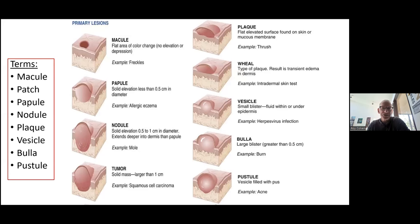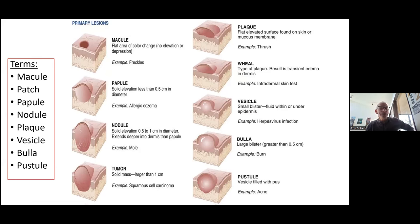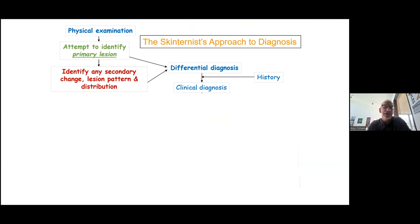Primary lesions come in a number of different types: macule, papule, nodule, tumor. These terms are not difficult to use, and using them accurately in a note almost makes taking a photo unnecessary — though pictures are nice to have too, because some subtle findings occur with secondary lesions.